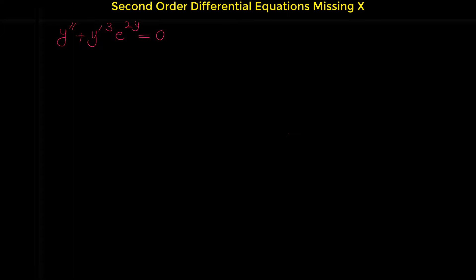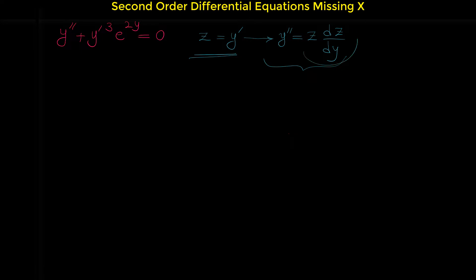As we saw in the previous video, for solving this type of differential equation, we always suppose z to be y prime. We use this substitution, and from this substitution, y double prime is z dz over dy. In the previous video, I showed you why when y prime is z, y double prime equals this. Now we want to use the same substitution for solving this differential equation.